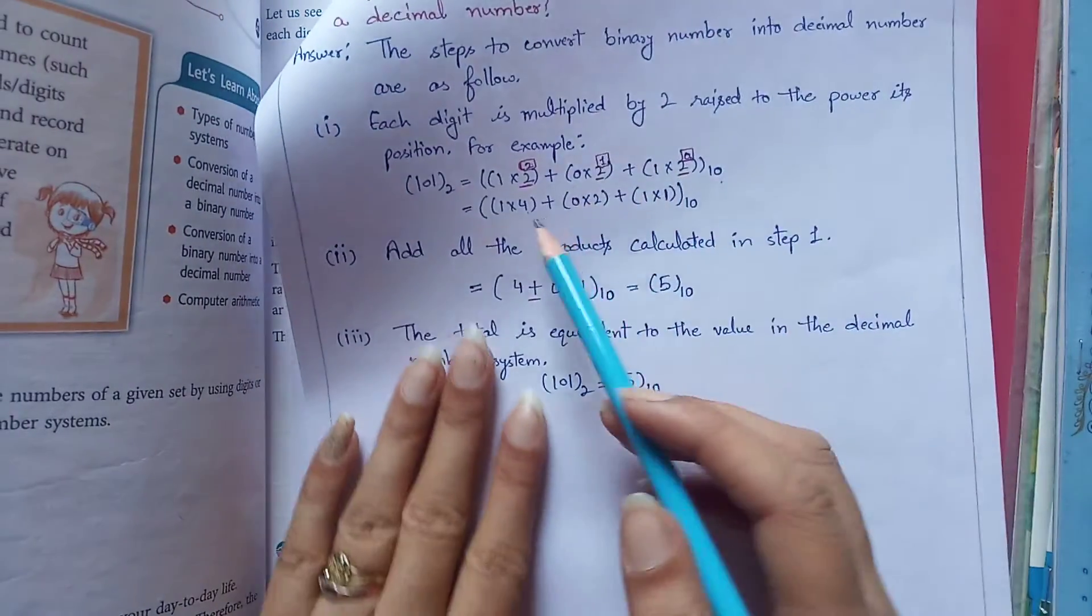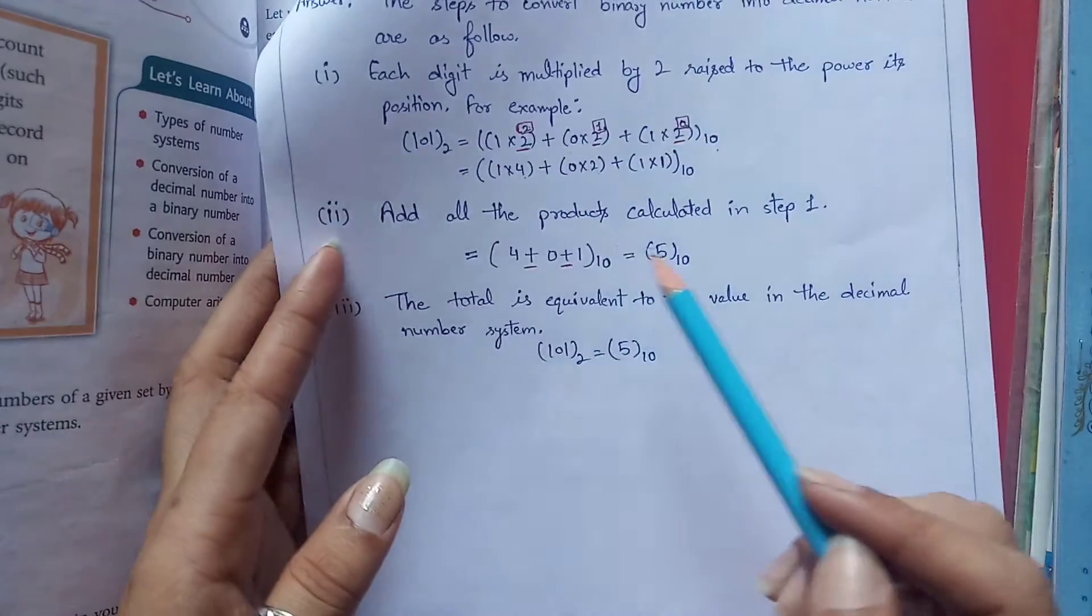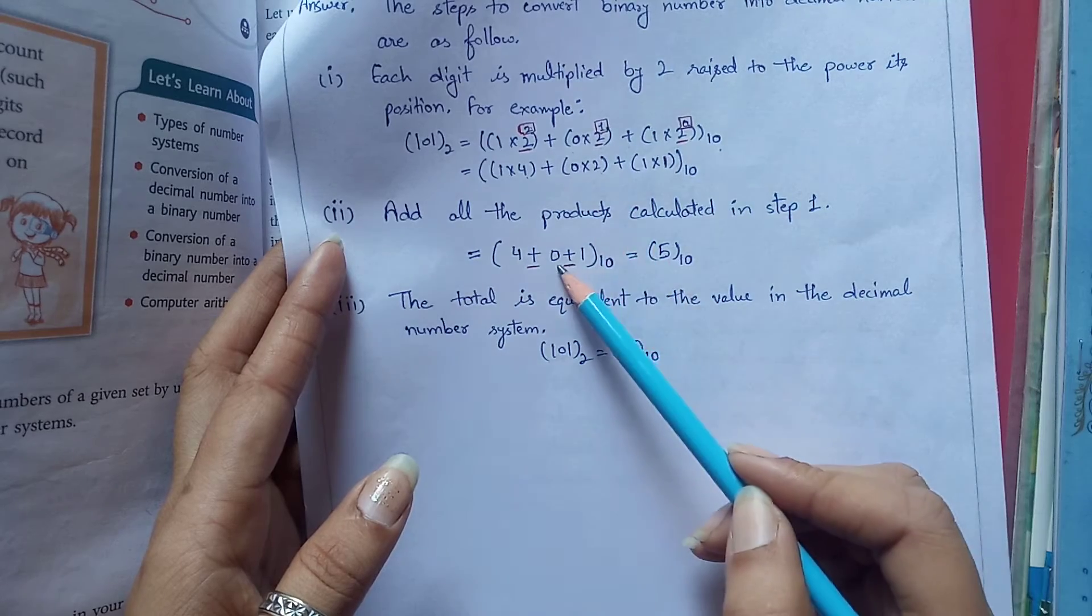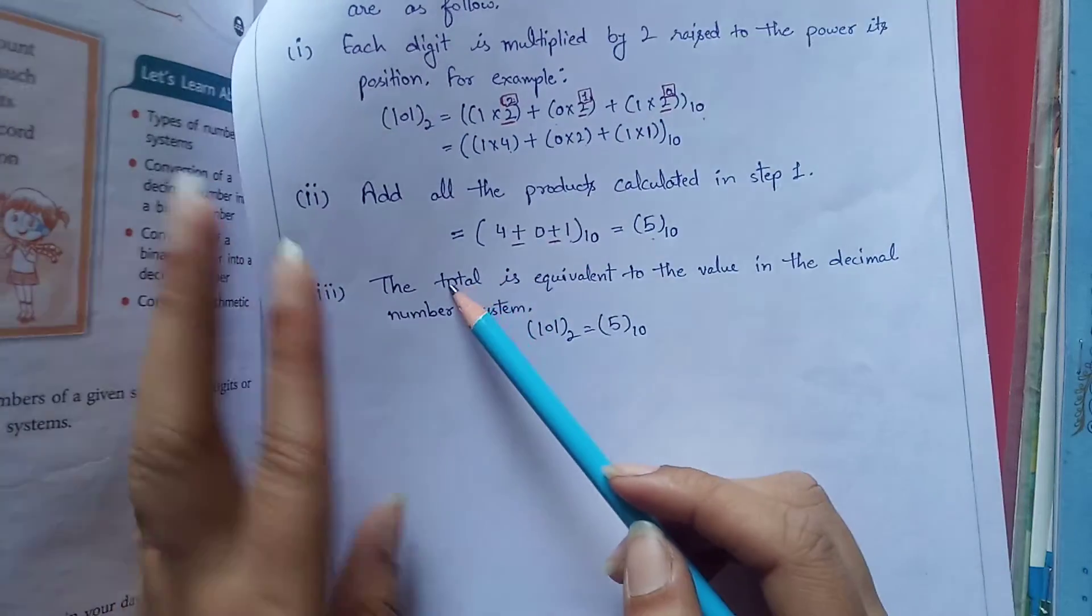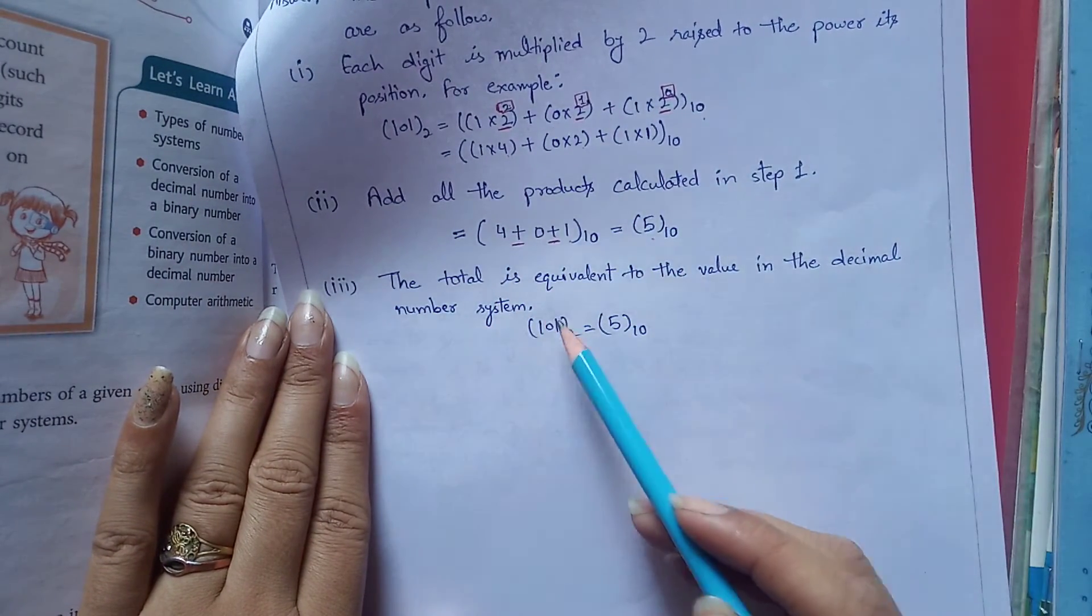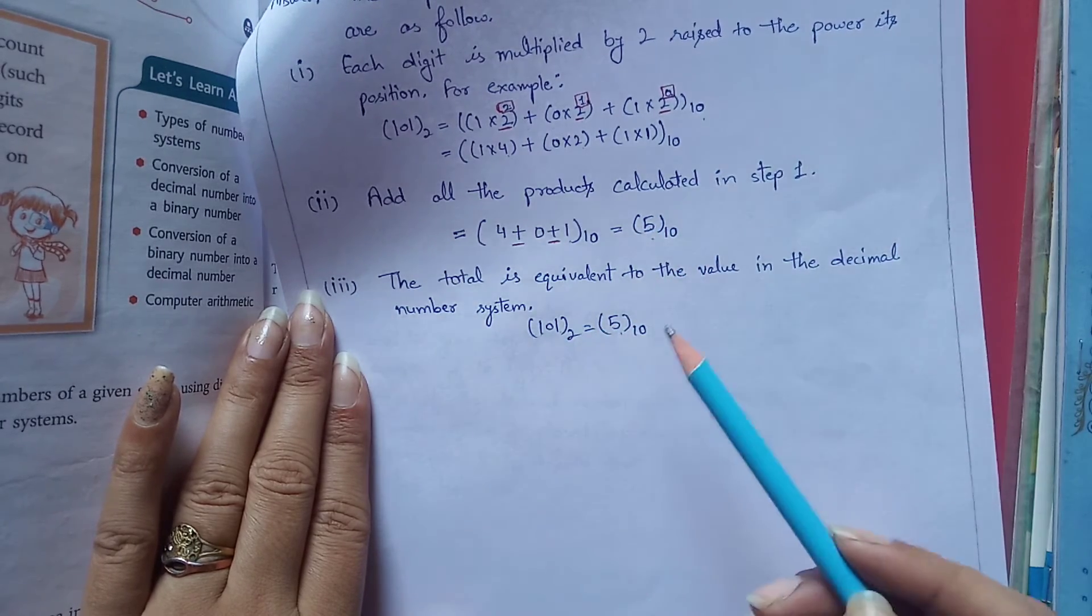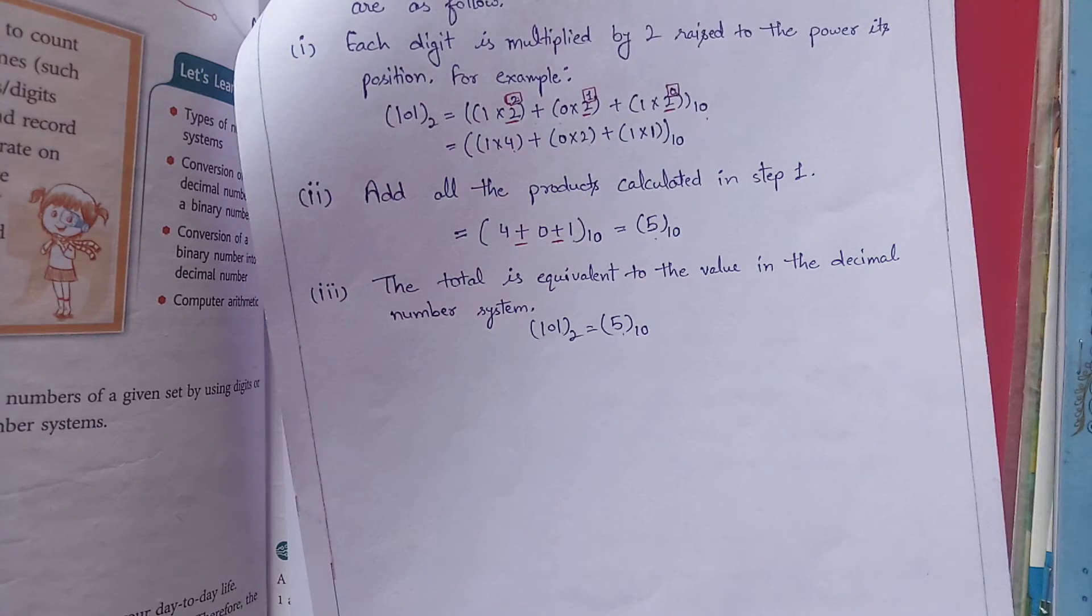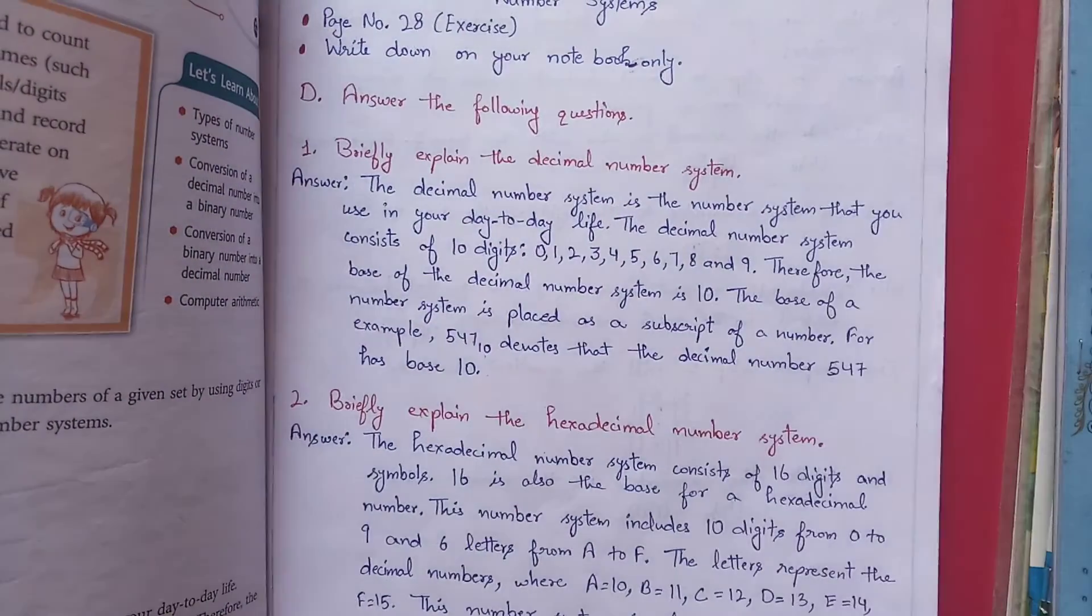Second step is add all the products calculated in step 1. We have to add: 1 into 4 is 4, plus 0 into 2 is 0, plus 1 into 1 is 1. So our total answer is 5. The total is equivalent to the value in the decimal number system, so the decimal number is 5 with base 10. With this question your second chapter is completed. If you have any query, ask me in the online class. Till then, take care of yourself.